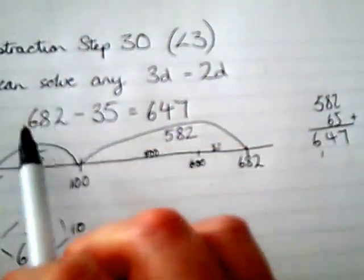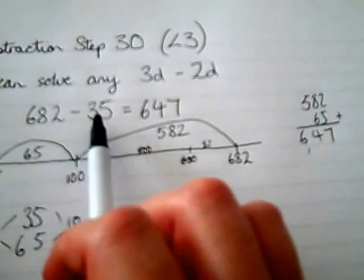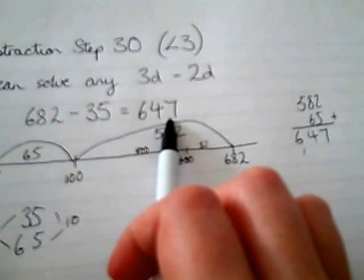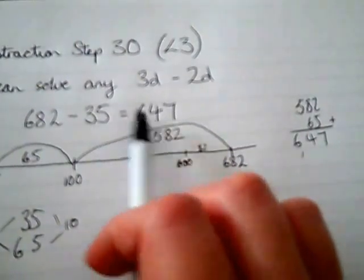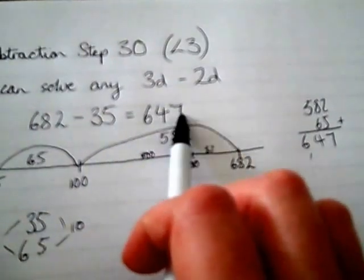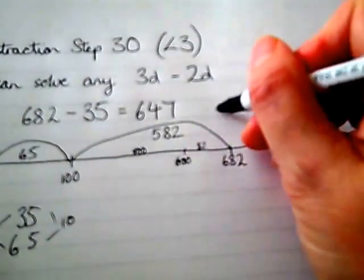Check to make sure it makes sense. 682 take away 35 is 647. If I want to also do another check, I can add these two numbers together to make sure they make that one. 670, 682. I know that I'm correct.